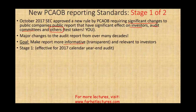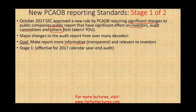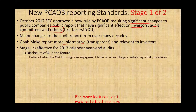We're going to talk about stage one first, and then stage two. Stage one will be effective for 2017 calendar year audits, meaning you're going to be audited maybe in 2018. Six months after a rule takes place, it will start to be tested on the exam, so expect those new rules for stage one to be tested pretty shortly. The new rule made additional requirements to the report. First is disclosure of auditor's tenure — the report will have to disclose the auditor's tenure, which is the earlier of when the CPA firm signs an engagement letter or when it begins performing audit procedures.